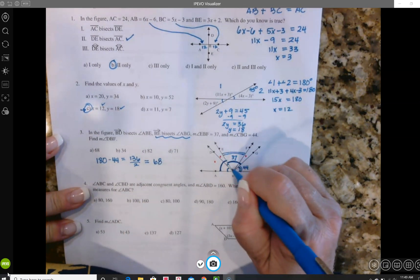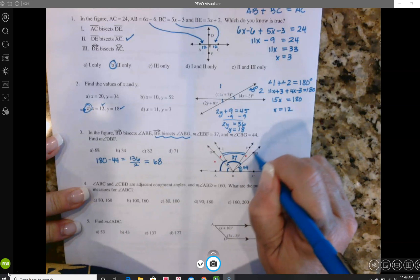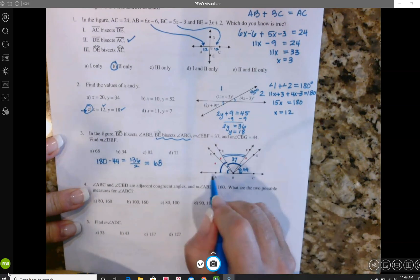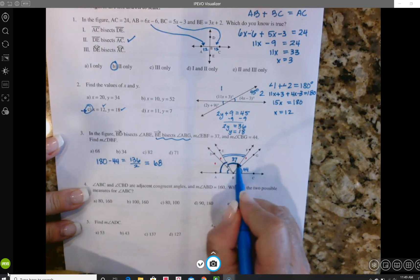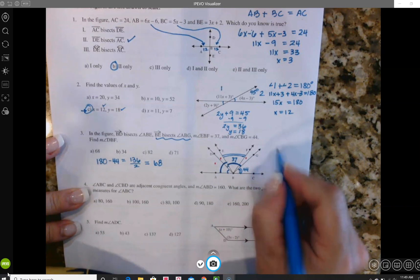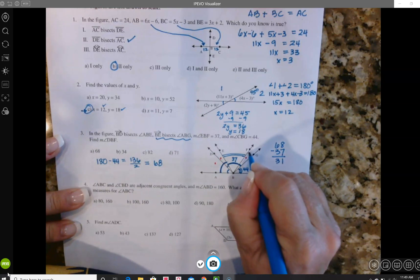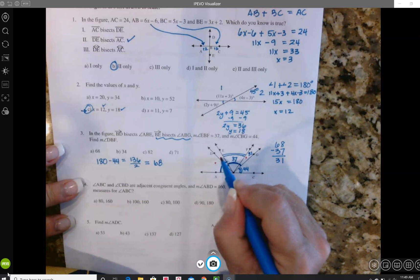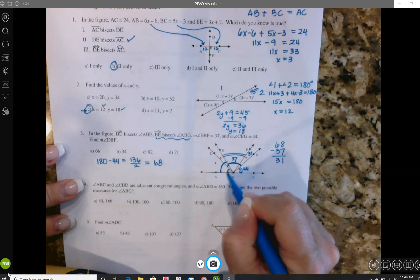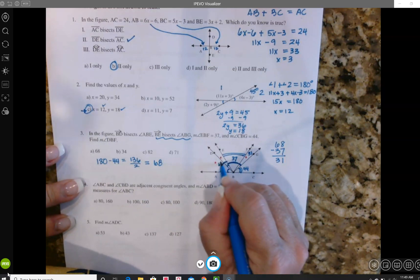So here I've got a 37, so I can figure out what this little red dot is here if I do 68 minus 37, so I get 31, so that little red dot is 31. And then these two dots over here, they are bisected, so this whole thing is 68, and if I cut each one of those in half I've got a 34 and a 34.